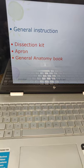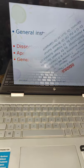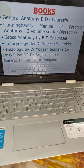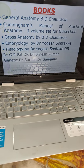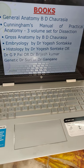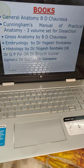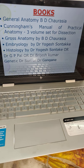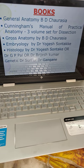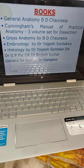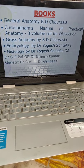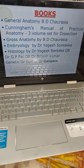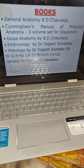You have to buy the apron according to your size. You have to buy the general anatomy book. Mainly I recommend general anatomy by Bidhi Choreshya. For dissection purpose you have to buy the Cunningham manual of practical anatomy, three volumes. Gross anatomy by Bidhi Choreshya, and recently the gross anatomy by Yogesh Sontake — he launched his new book, it is very good as compared to even Bidhi Choreshya and Vishram Singh. Embryology by Yogesh Sontake. Histology by Yogesh Sontake, or you can also buy histology by Chhatphal, Vrijesh Kumar, Jineti by Suri or by Dr. Gangne.